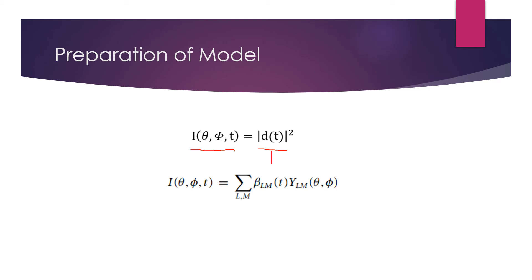Theoretically, these can just be given by the square of the photoionization matrix elements d of t. We can expand this expression using spherical harmonics to give the following expression. Here β represents the anisotropy parameters, which are really the only things we need to calculate to find the angular distributions themselves. Seems simple. Let's have a look at how to find the anisotropy parameters.